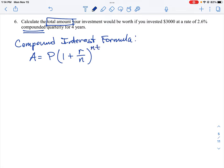In this case, we know P is equal to the principal, that's the amount that you invest, so that is the $3,000. We know the interest rate is given as 2.6%, so we have to convert that to a decimal, which is 0.026.